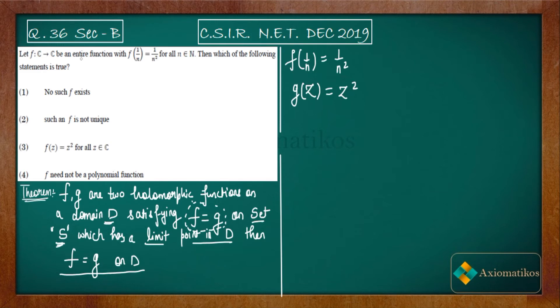Entire actually means holomorphic on the complex plane. Now see, f and g are two equal functions on which set? On S = {1/n such that n belongs to natural numbers}. Now you know that for this set, zero is a limit point, and this set S has a limit point zero, and we know that inside your domain C, zero exists, right?